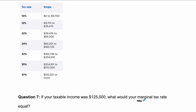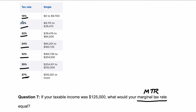So, underline it — marginal tax rate, I'll abbreviate it M-T-R. Each of these percentages here are different marginal tax rates, and they range from 10% up to 37%. What those marginal tax rates represent is a percentage that you'll pay in taxes on a margin of your income.